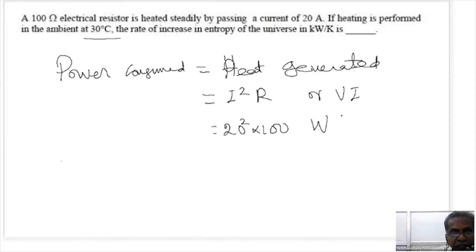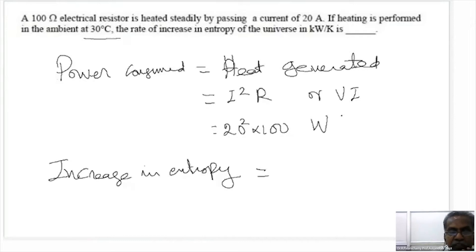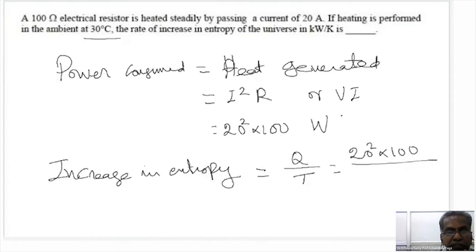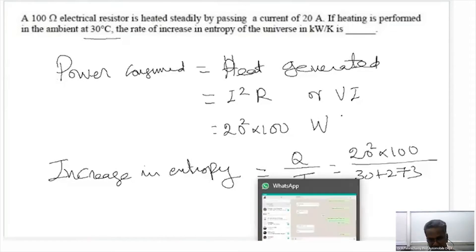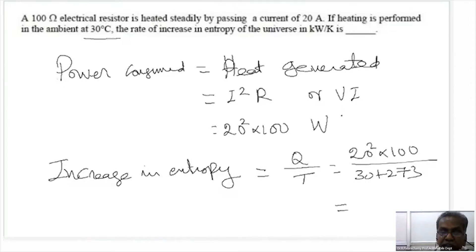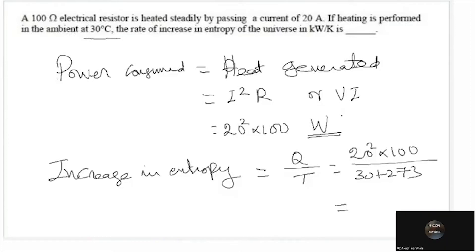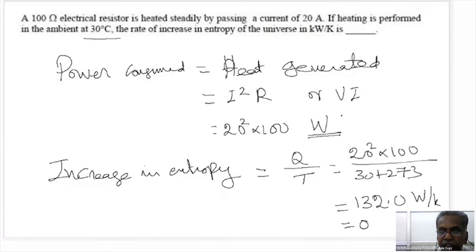Increase in entropy of the universe equals Q by T. The result must be in kilowatt — convert from watts by dividing by 1000. 132.0 watts gives 0.13 kilowatt per Kelvin.